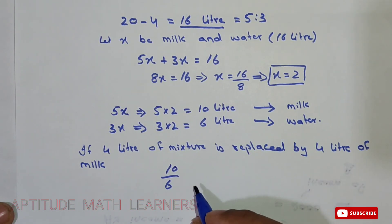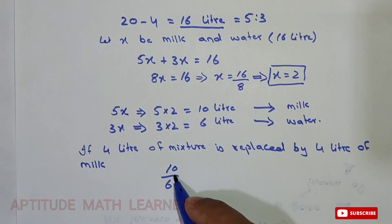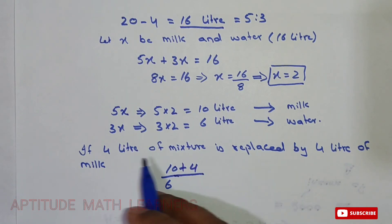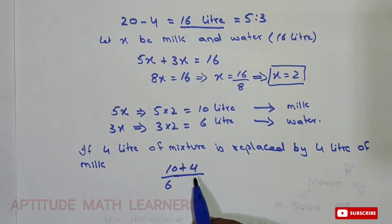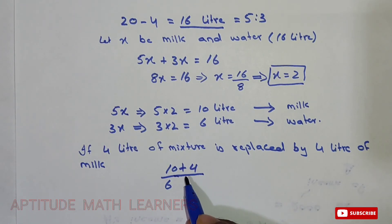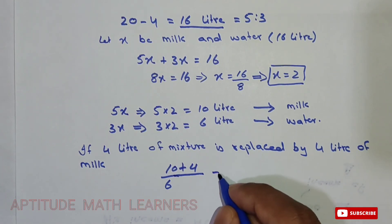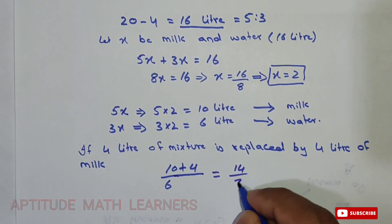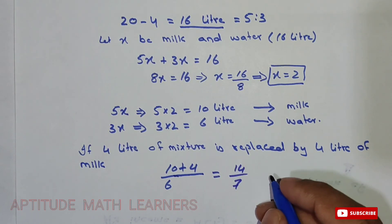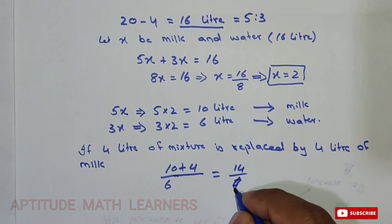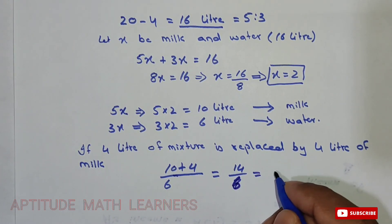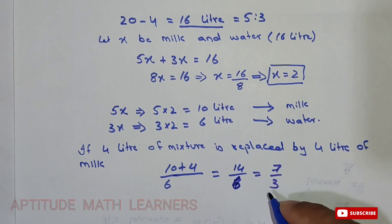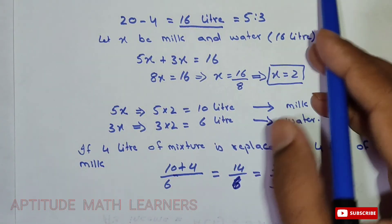We have 10 litres of milk and 6 litres of water. Since 4 litres of mixture is replaced by 4 litres of milk, we just add 4 litres to the milk: 10 plus 4 equals 14. So the ratio becomes 14 upon 6, which simplifies to 7:3.